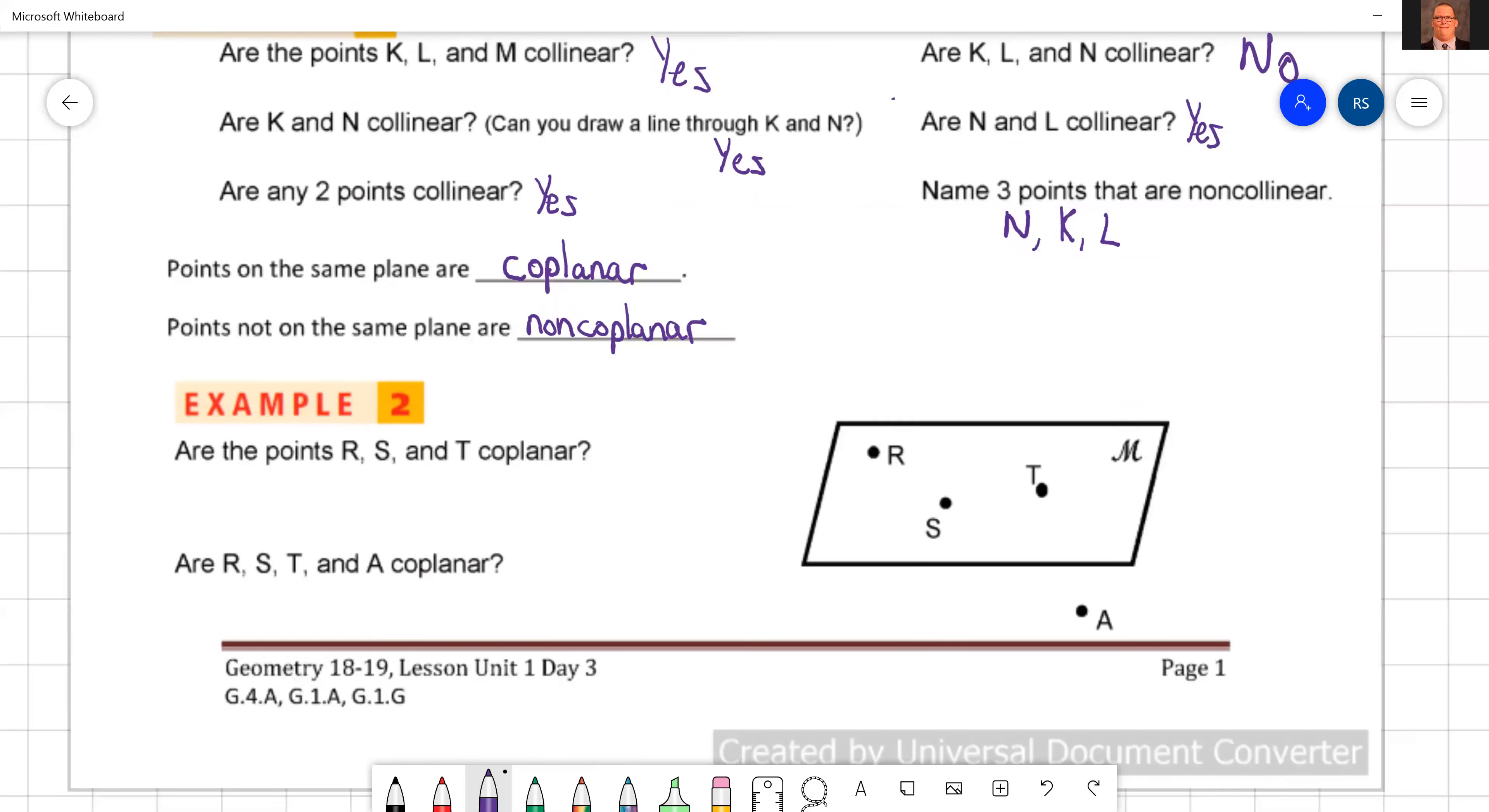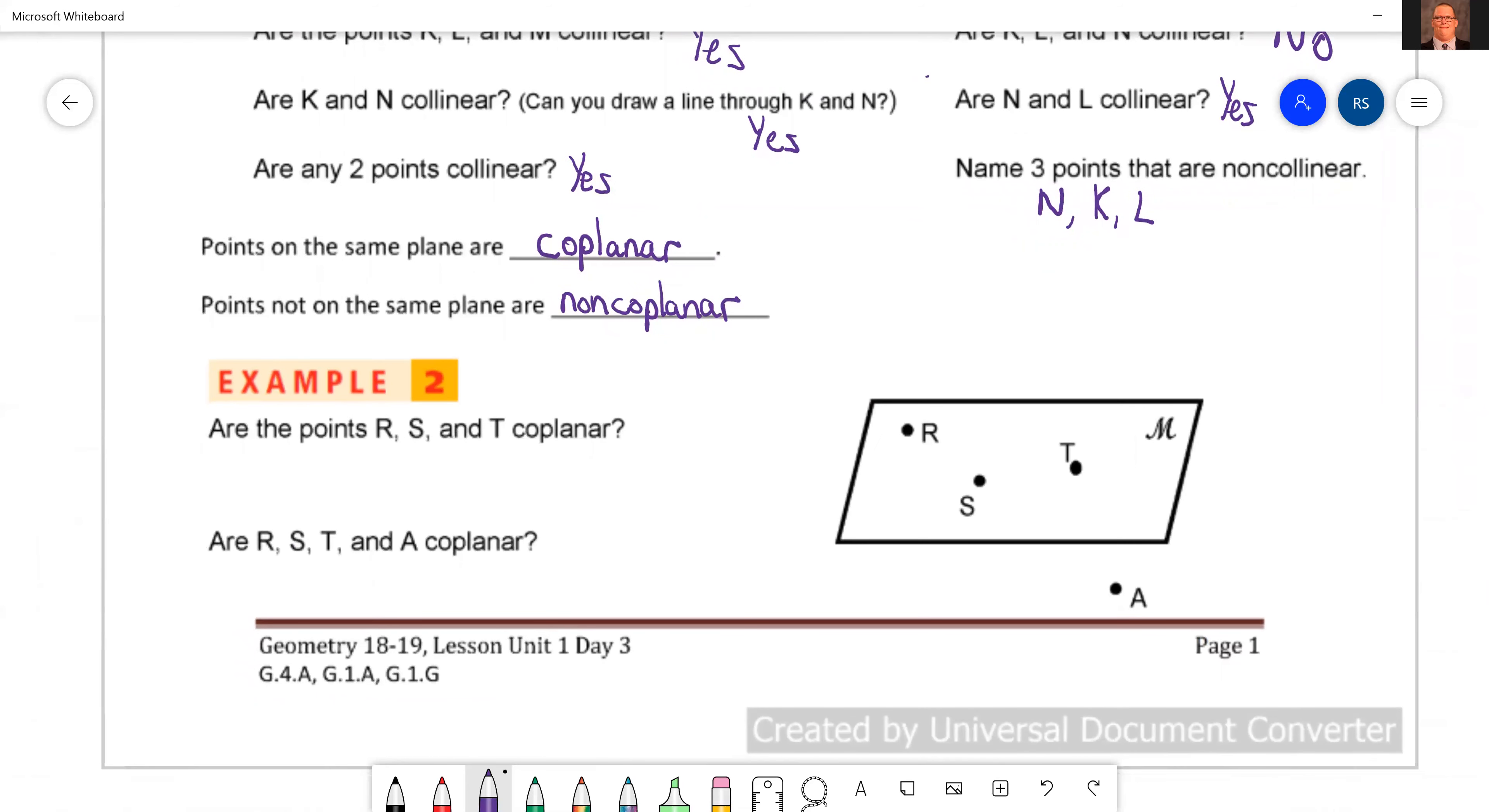Points not on the same plane are non-coplanar. Okay, so example two. First, they ask us are the points R, S, and T coplanar? And you mark a plane, you know where a plane's at based on the shape. So are those points coplanar? We're talking about R, S, and T. Yep, they're all within the shape. So we can give a big yes to that.